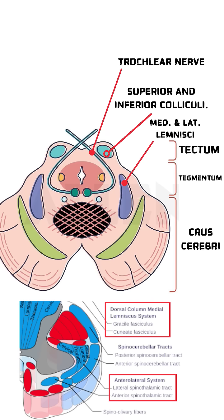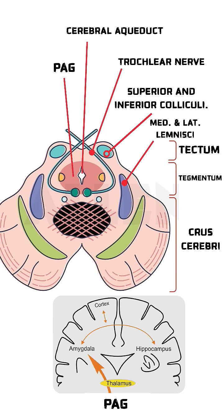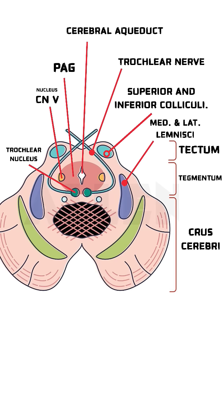The tegmentum is also called the core hub. It has the cerebral aqueduct for CSF flow, the periaqueductal gray matter which has a role in pain modulation and behavior, and the trigeminal nucleus and the trochlear nucleus as well.